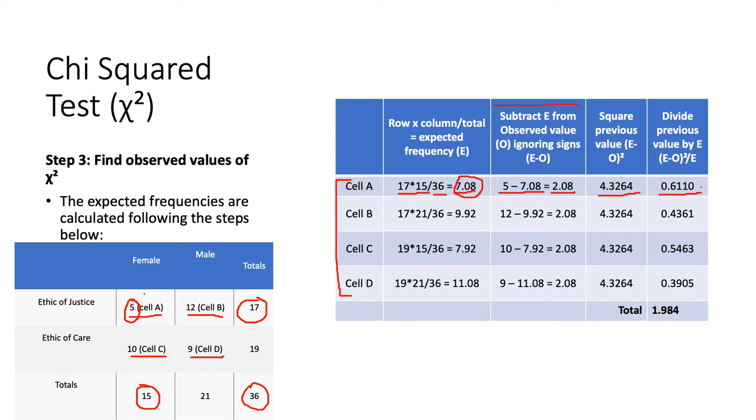Okay, let's go again for cell B. So, cell B is here. So, again, the total number of Ethic of Justice is 17. The total number of males this time is 21. And then we still divide it by 36, which is the total number of participants. And this gives us an expected frequency value of 9.92. Again, we take this value and we subtract it from our observed value from cell B. And again, it gives us 2.08. We square it. And then we divide it by our original expected frequency value, 9.92.